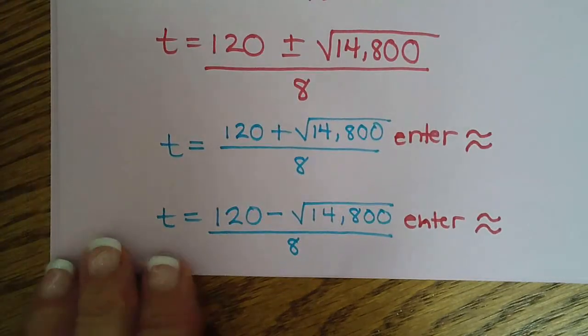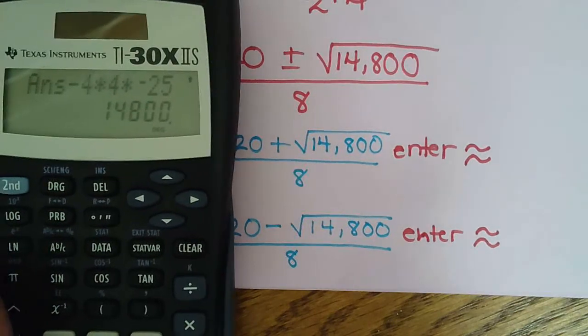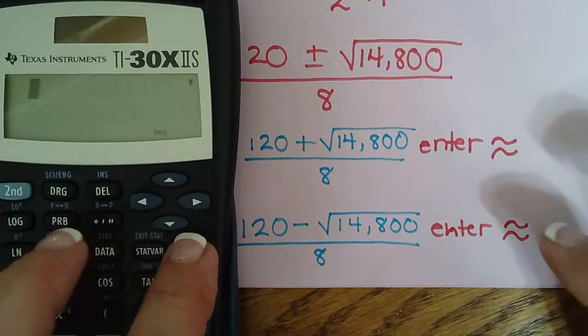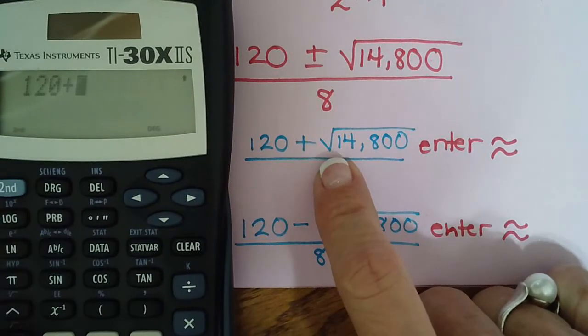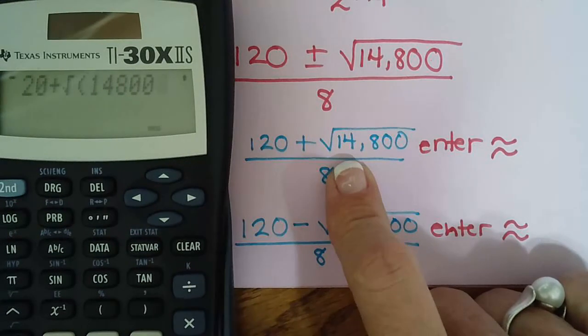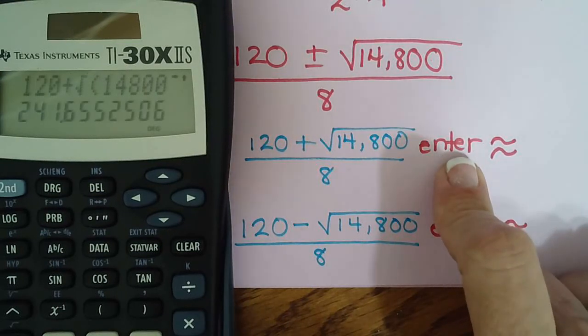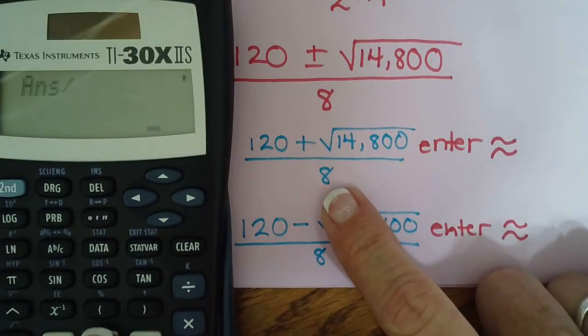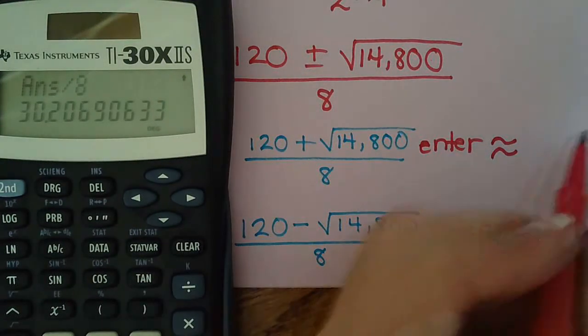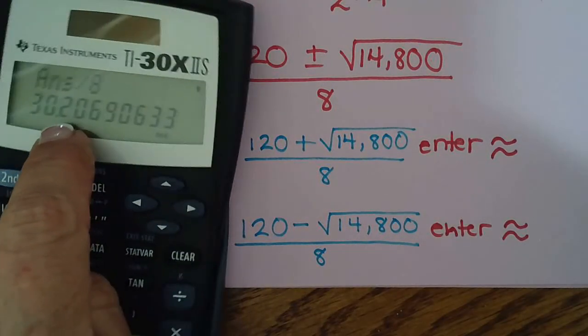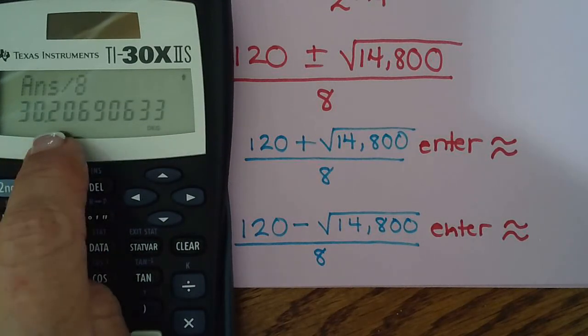And now we are ready to type it in. So we're going to do 120 plus second x squared, 14,800. Close your parentheses and hit enter. That totals up the top. And then divide it by 8. Oh, look at that good guess Ms. Norris had. I said it's going to be about 30 seconds. Boom. It's 30.2 seconds. Pretty good guess, huh? So it said round to the nearest tenth. Two is in the tenths place, followed by zero. So that says leave it two. So 30.2 approximately. And remember this is t time in seconds.